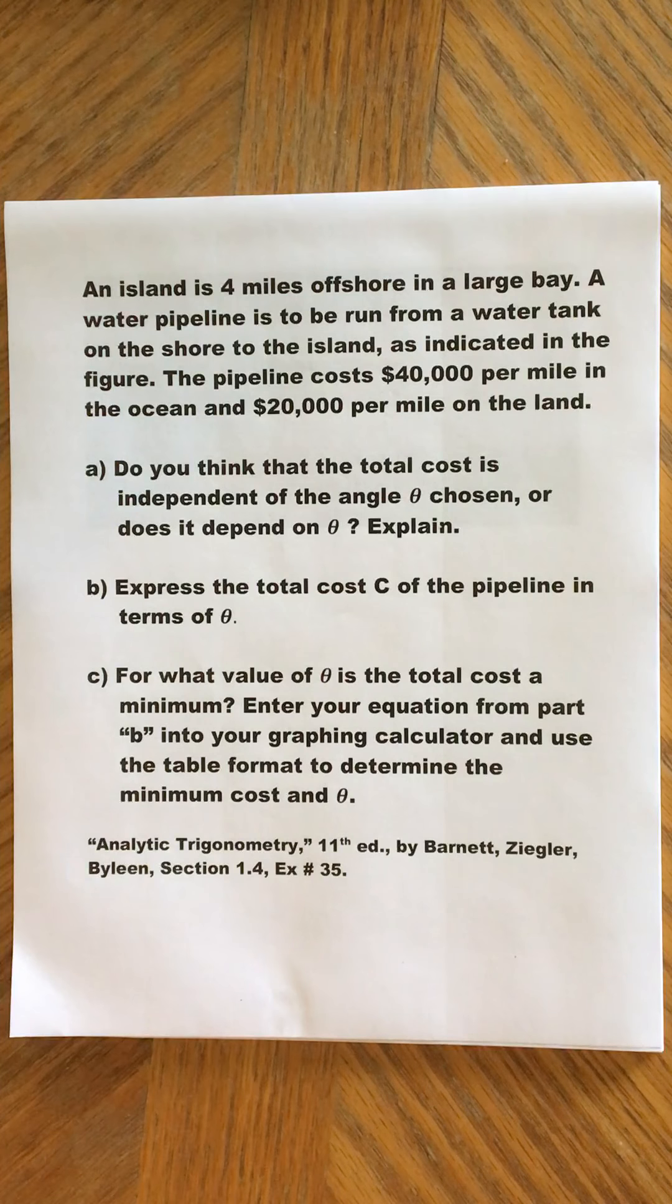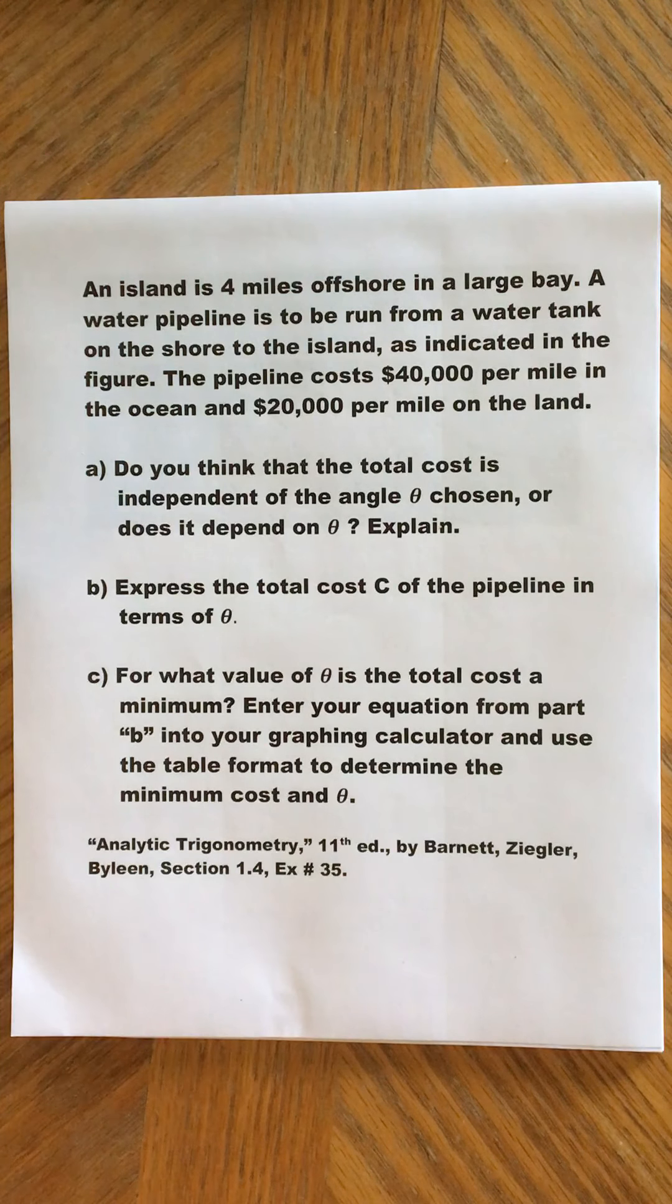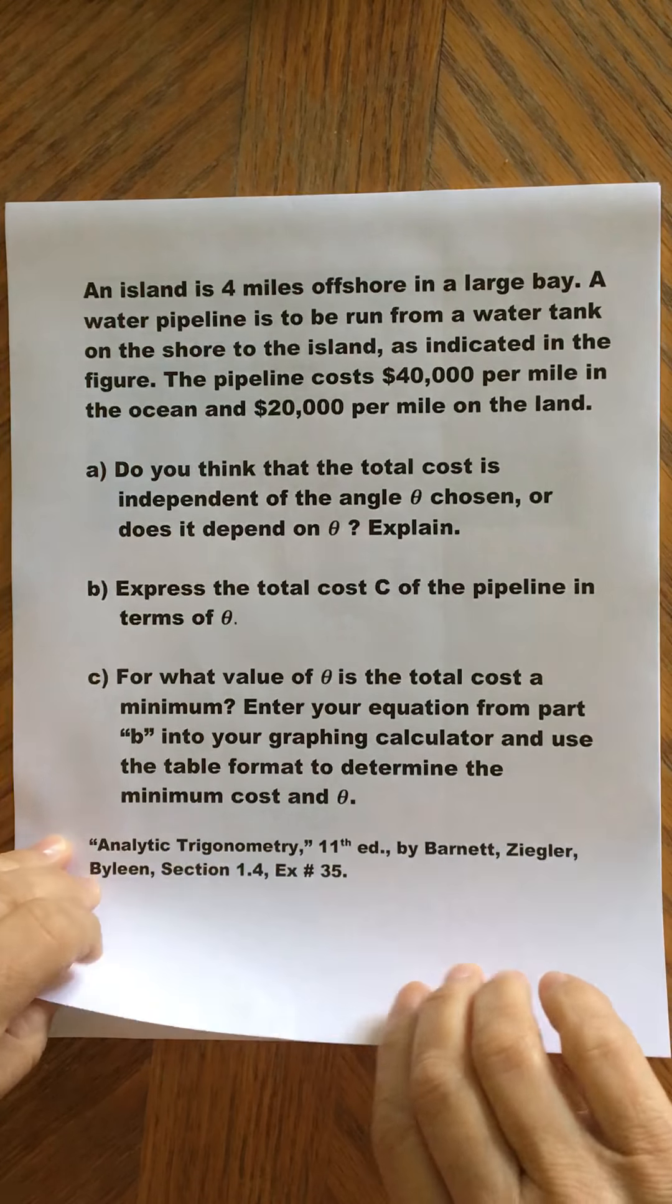An island is four miles offshore in a large bay. A water pipeline is to be run from a water tank on the shore to the island as indicated in the figure. The pipeline costs $40,000 per mile in the ocean and $20,000 per mile on land. So obviously it's cheaper to lay pipeline on the land than it is in the ocean. Let me show you the picture.